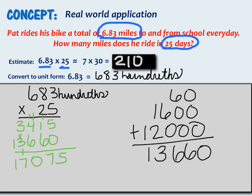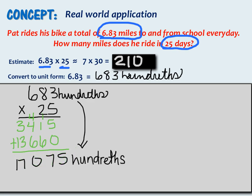Now remember, that's 17,075 hundredths, not whole. Since we converted our decimal to the hundredths, we need to convert it back to standard form. 17,075 hundredths is equal to 170 and 75 hundredths.